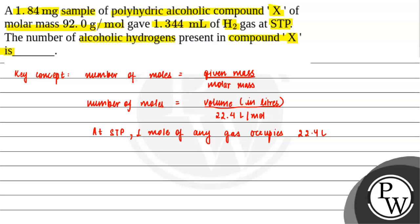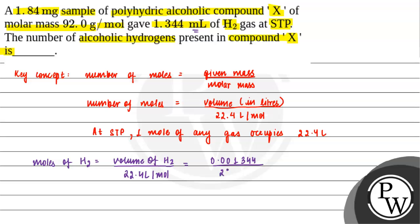Humeh ko pehle nikalne chahiye number of moles of the hydrogen gas. For hydrogen gas, moles of H2 is equals to volume of H2 divided by 22.4 liters per mole. Aur ml mein value di hai toh humeh isko 1000 se divide karenge. So, that would be equals to 0.001344 liters divided by 22.4 liters per mole, which is equals to 6 multiplied by 10 to the power minus 5 moles.